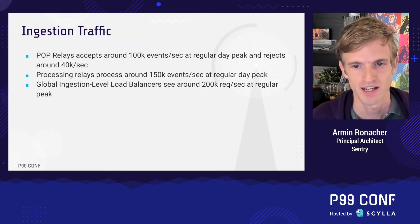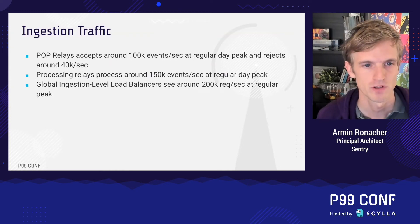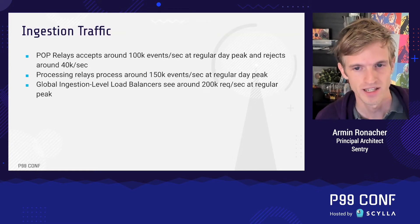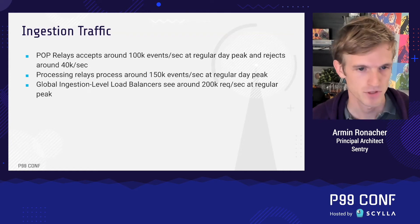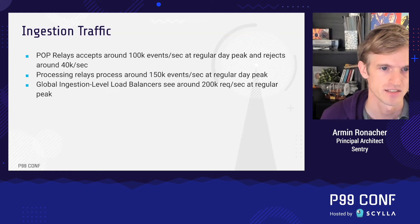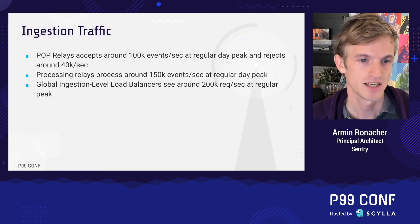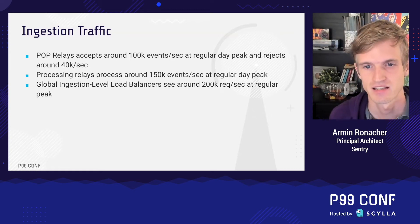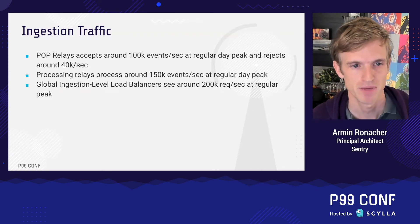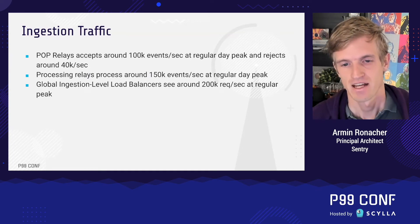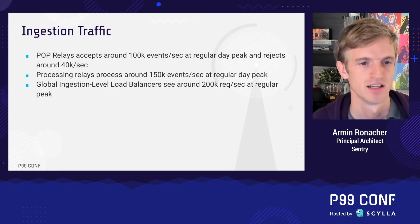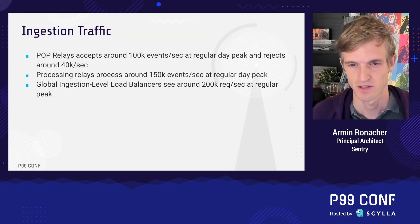In terms of scale, the POP relays we operate for Sentry.io see around 100,000 envelopes per second, with about 40,000 rejected for reasons like being out of quota. The processing relays in the inner layer actually see more events than the outer layer, because the outer layer aggregates some events while also creating new ones sent inward. At the global ingestion load balancer level, we see around 200,000 events per second at regular day peaks — and peaks can be much higher.